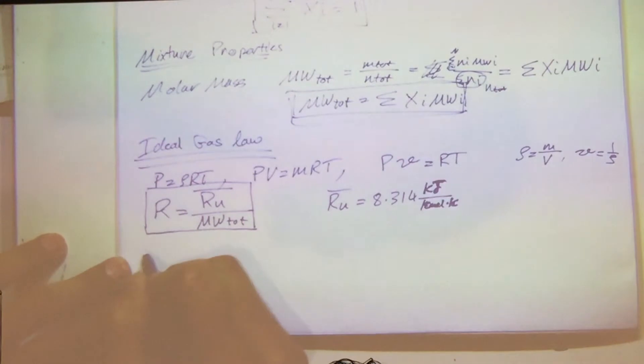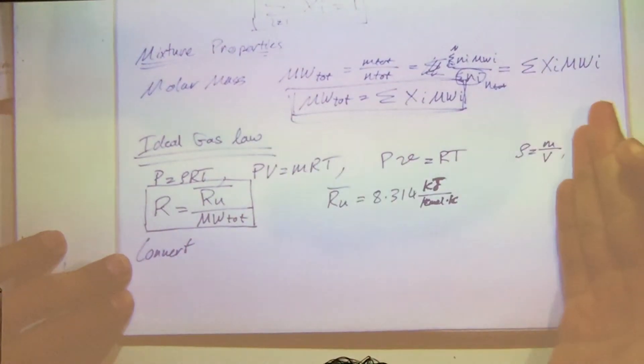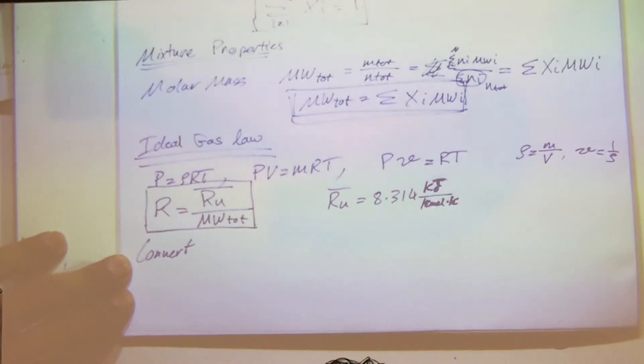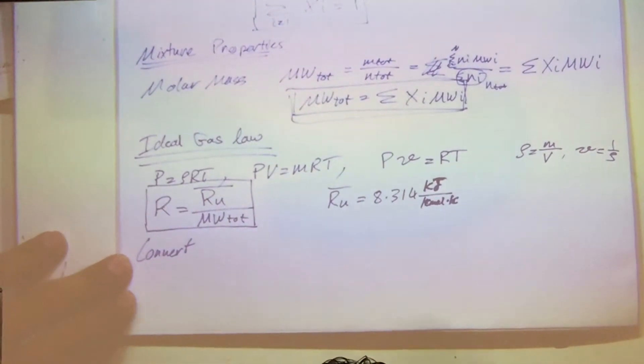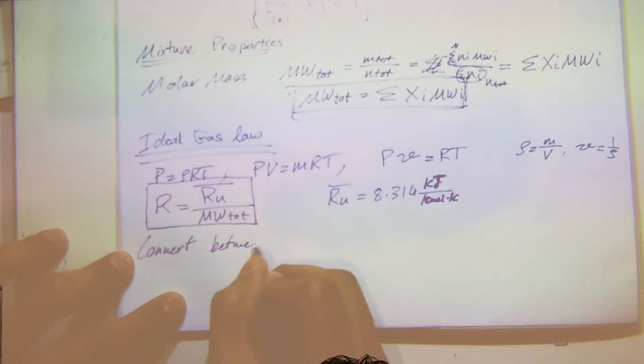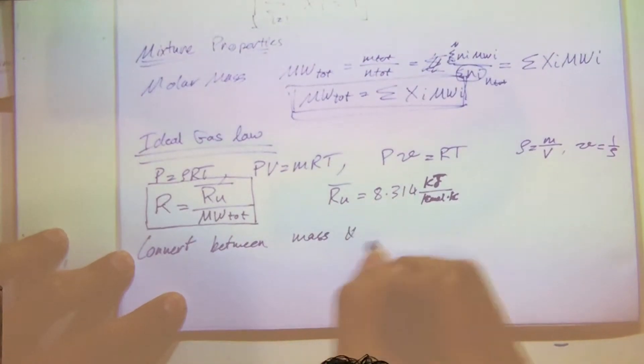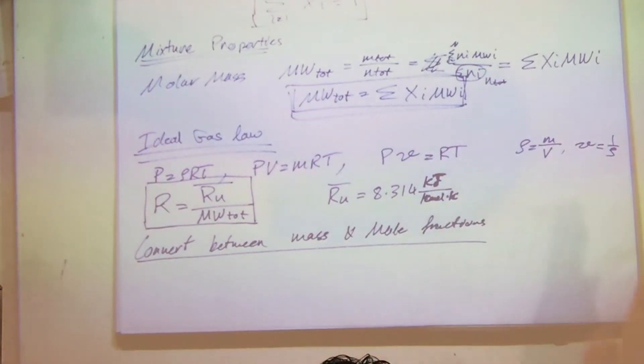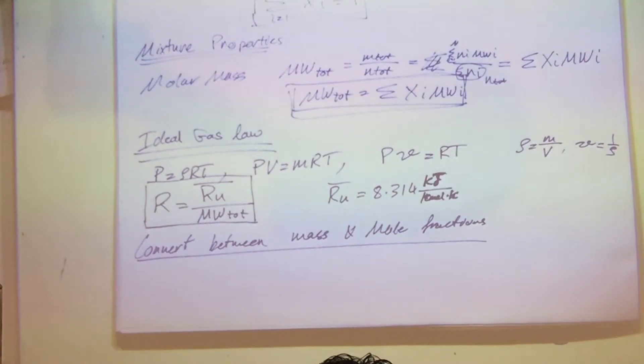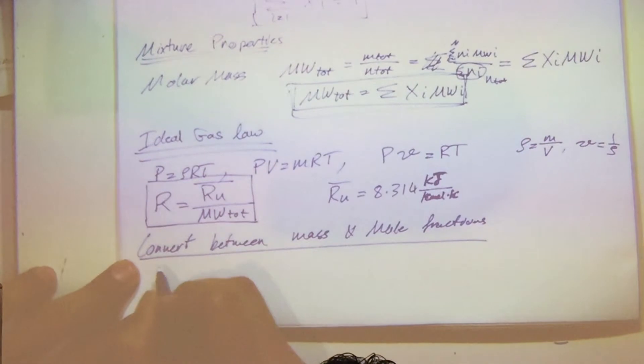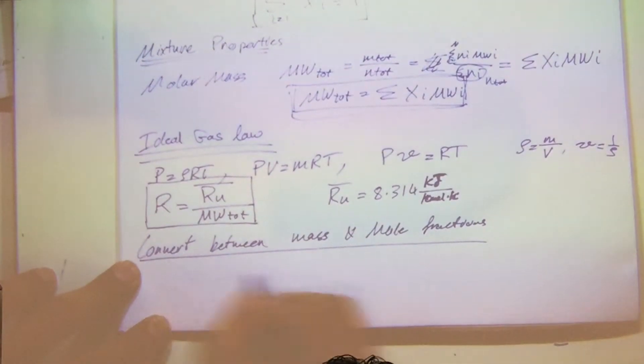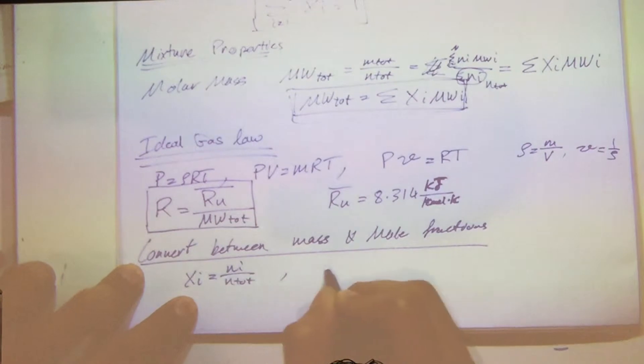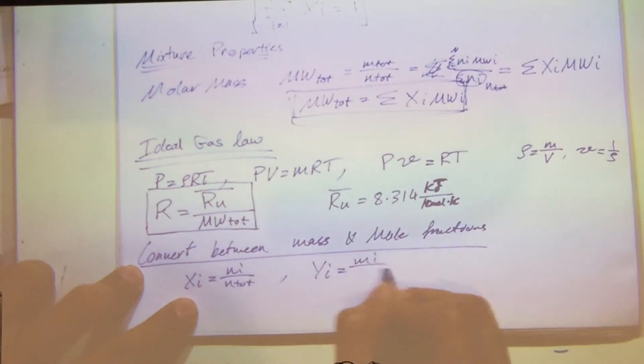So how do we convert? Like I said, you can't solve the problems with mole fractions or you can solve them with mass fractions. But how do you convert from mole fractions to mass fractions and mass fractions to mole fractions? It's straightforward, so let's look at converting between mass and mole fractions. We know the definition of my mole fraction is equal to Ni over N total, and I know my definition of my mass fraction is Mi over M total.